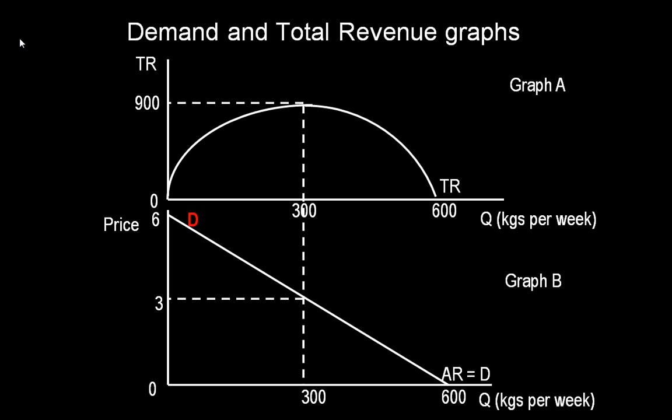There were other points on the demand curve too. We have shown the point where price equals £3 and quantity equals 300kg. This and other points on the demand curve translate directly onto the total revenue function shown in graph A, the graph in the top part of the slide. When price equals £3 and quantity equals 300kg, total revenue equals £900. You should also note that the quantities of 0 and 600 on the total revenue graph translate onto the demand graph. The total revenue curve has a dome shape, reflecting the fact that as price falls and quantity rises, total revenue increases at first, in our case until we reach 300kg, and then falls.